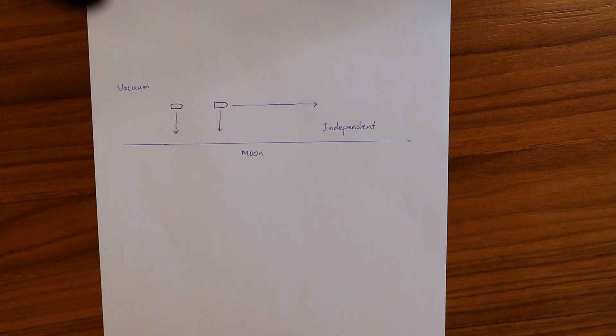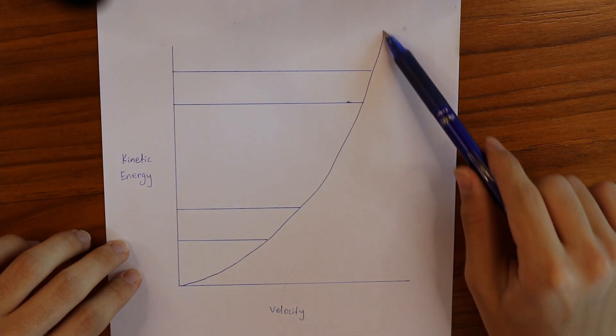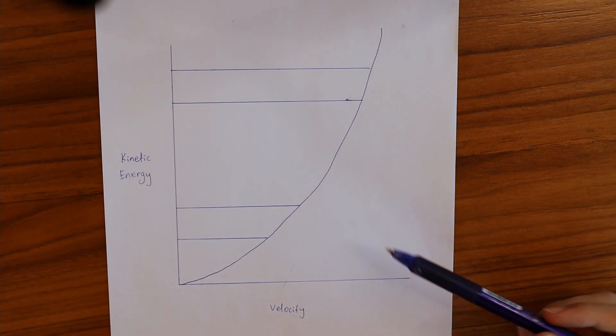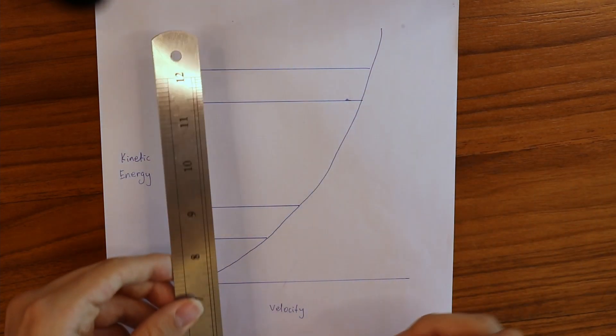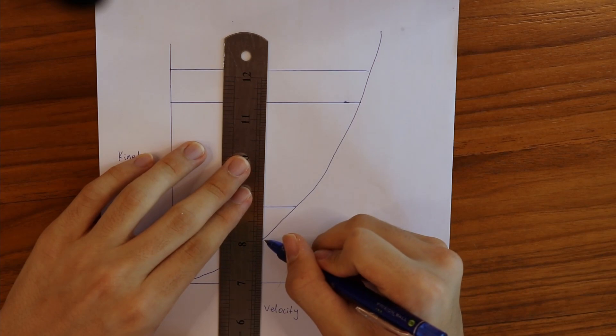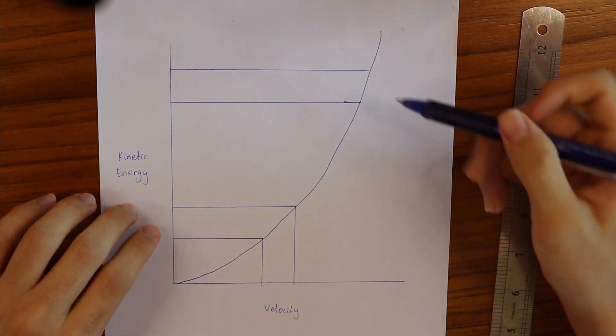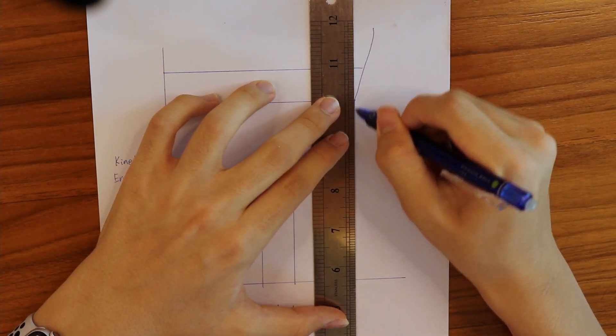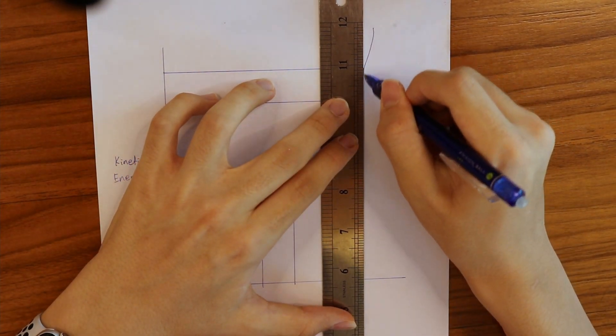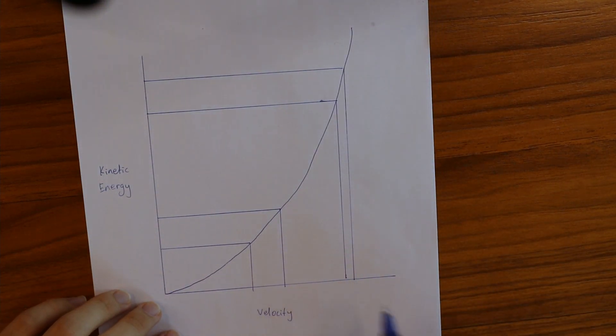This is because, said more mathematically, since the kinetic energy of an object is proportional to the square of the velocity, a set amount of energy increases the velocity of an object a lot less when the velocity is already high. As you can see from the differing widths of these two regions.